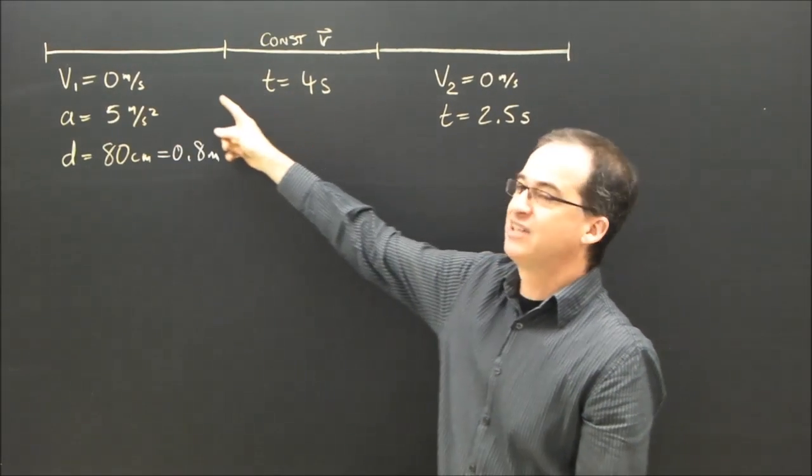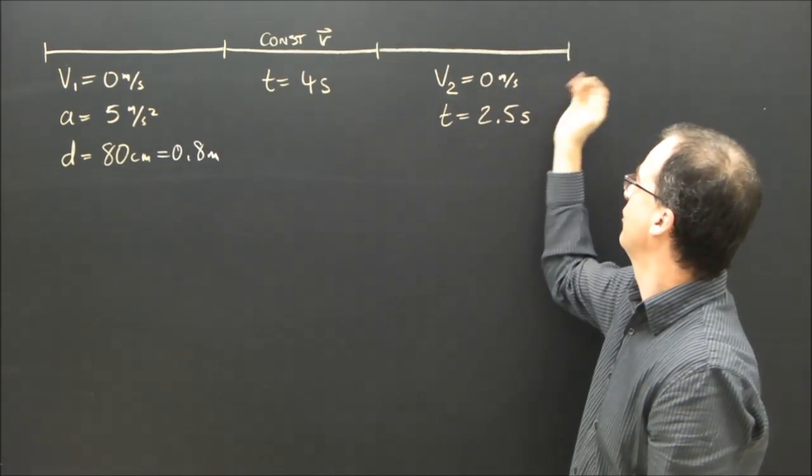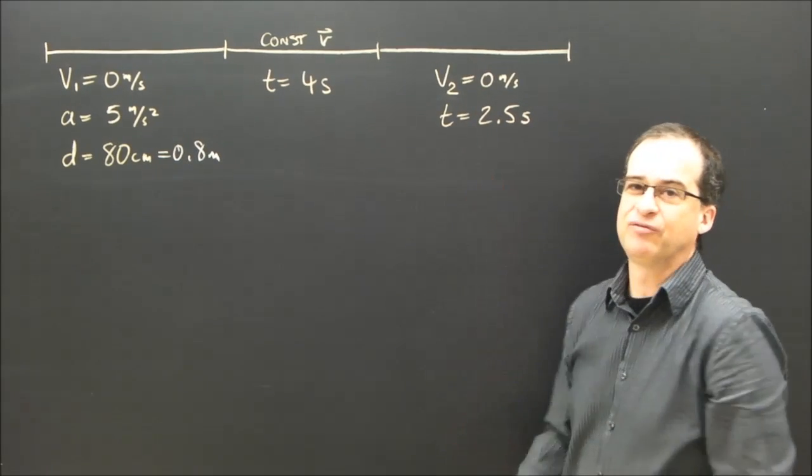The middle section, I know it stays at some velocity for 4 seconds, and then it begins to slow down to stop, which means v₂ is 0 m/s, and you do that for 2.5 seconds.